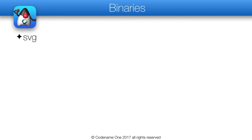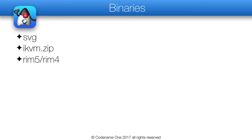Let's go over the files and directories in the binaries project and explain them one by one. The SVG directory is from the open source Batik project — it's unmodified, and we need it for the designer tool for SVG support. The IKVM project is hard to compile without Windows so we have a pre-compiled version here. These are legacy stubs of the BlackBerry OS — I won't cover BlackBerry here so these aren't really needed. We also need stubs to compile JavaFX code; we don't embed this.